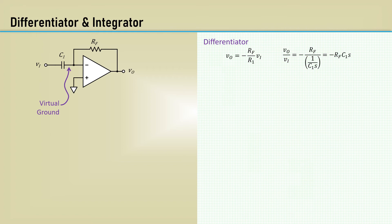Because a multiplication by S in the complex frequency domain is equivalent to a differentiation in time domain, the output voltage is given by this time derivative. The differentiator time constant is RfC1.